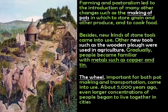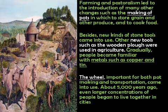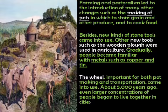Farming and pastoralism led to the introduction of many other changes, such as the making of pots in which to store grains and other produce and to cook food. Besides this, new kinds of stone tools came into use. Other new tools such as the plow were used in agriculture. Gradually, people became familiar with metals such as copper and tin. Another important change was the invention of the wheel, which was important for both pot-making and transportation.